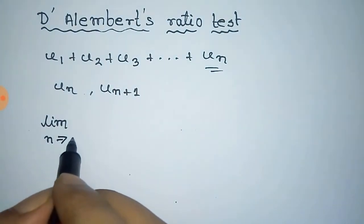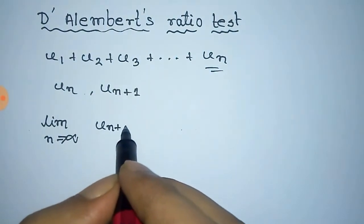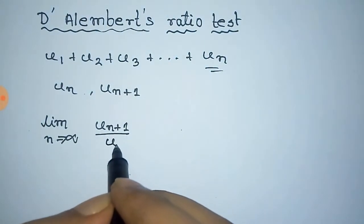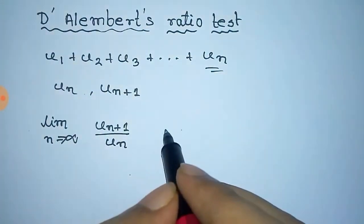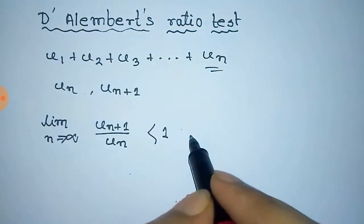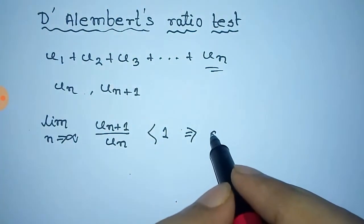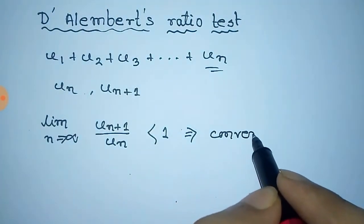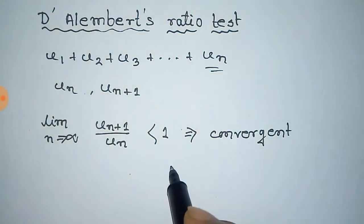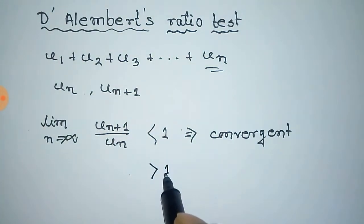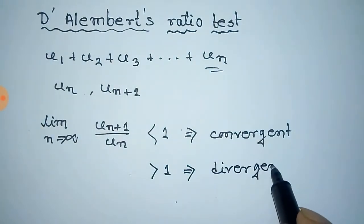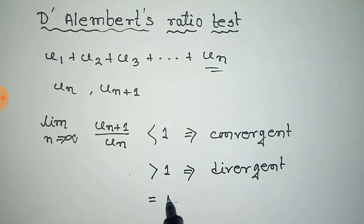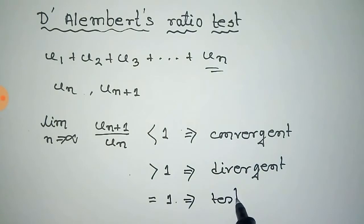By the D'Alembert's ratio test, we write: limit as n tends to infinity of u_{n+1} divided by u_n. If this limit is less than 1, then the series is convergent. If it is greater than 1, then it is divergent. And if it is equal to 1, then the ratio test fails.